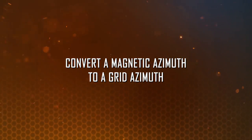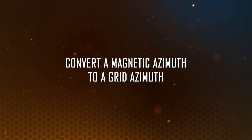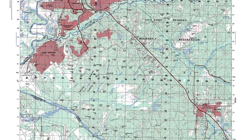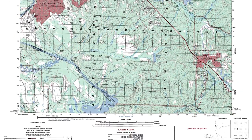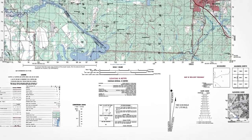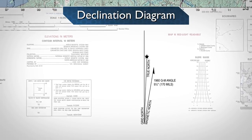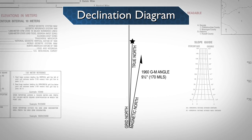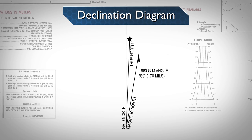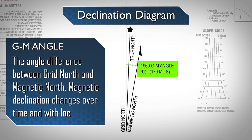To convert a magnetic azimuth to a grid azimuth, you first need to locate the map's declination diagram and the grid magnetic, or GM, angle. The declination diagram, found at the bottom edge of the map, shows both a graphic picture and a written summary of the GM angle. The GM angle is the angle difference between grid north and magnetic north. Magnetic declination changes over time and with location. The written summary includes the year the mapmaker measured the GM angle and the amount of that angle in both degrees and mils.